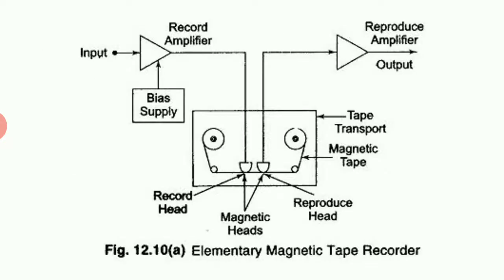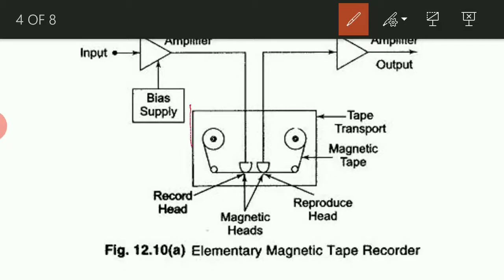Let us understand the schematic diagram of the working of a magnetic recorder. Here you can see various parts of it. The main part is the cassette itself, with two small circles representing the transport mechanism. A major part is the magnetic tape, along with a recording head and a reproducing head.